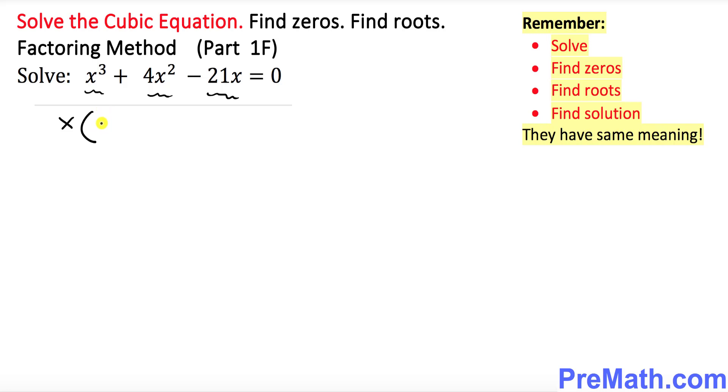So what is going to be inside the parentheses? Inside parentheses is going to be x squared plus 4x minus 21. That is equal to 0.